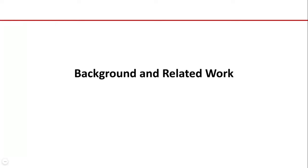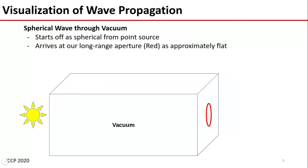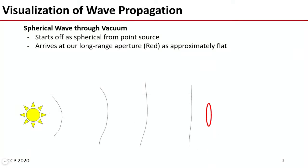So to begin, let's take a look at the background and related work. We are primarily concerned with what happens as light propagates through the atmosphere. In a vacuum, a pulse of light will originate at the source and spherically propagate outwards until it eventually lands on our aperture in red. Since we are typically talking about long ranges in this work, as is the case with most turbulence works, we consider the wave to arrive at our aperture roughly flat.